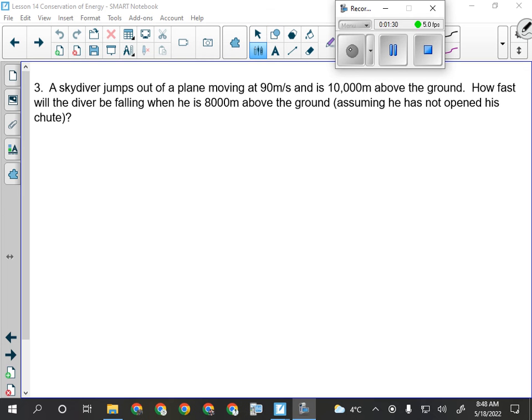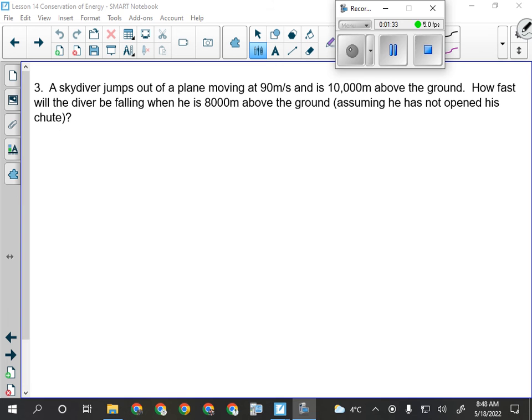So we have a skydiver jumps out of a plane, this is plummeting from our initial point here where our height is 10,000 meters and our initial speed is 90 meters per second. Does it matter that that 90 meters per second isn't down? Like when you jump out of a plane, you move at the same speed the plane is moving, that's actually horizontal. Does that matter? It doesn't make any difference. Energy is scalar, doesn't care what direction you're moving, just how fast you're going.